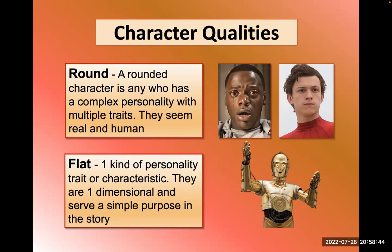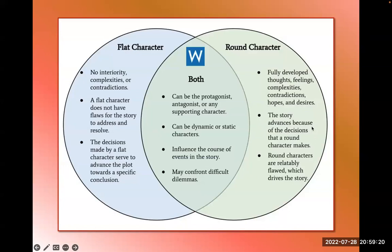We also have round and flat characters. Round characters are complex, have multiple traits, seem real and human. Flat characters have basically one characteristic — like C-3PO, whose one characteristic is constant concern for self-preservation, which leads to comic relief. Flat characters have no complexity or contradiction, no flaws for the story to address. Round characters have fully developed thoughts, feelings, complex contradictions, hopes and desires — that's what creates the goals and conflict. The story advances because of the decisions a round character makes.